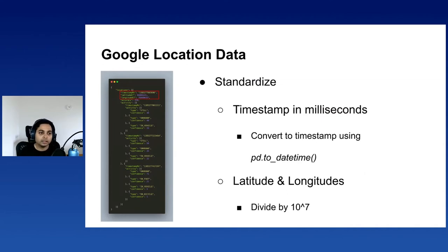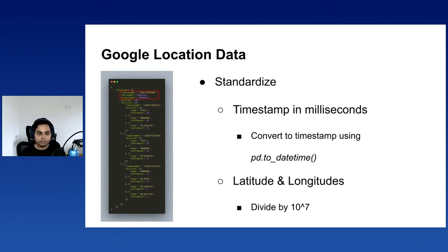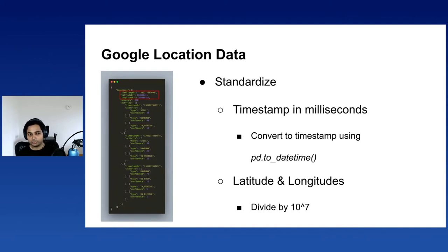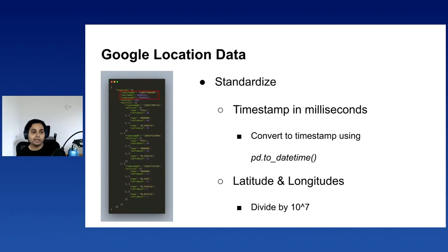If you look at this data, it's a JSON with a list of all the timestamps, latitudes, and longitudes. There are also some additional features like what accuracy Google believes you're at a location, and some of the activities you were doing — whether you were traveling in a vehicle, on a bike, or on foot. For this use case, I just took the timestamps and the latitude and longitude. Some of these data points are not in the expected format — for example, the timestamp is in milliseconds, which you can easily convert using a Pandas function. The latitude and longitude values are multiplied by 10 to the power of 7, so you need to divide them by 10^7 to get the actual coordinates.